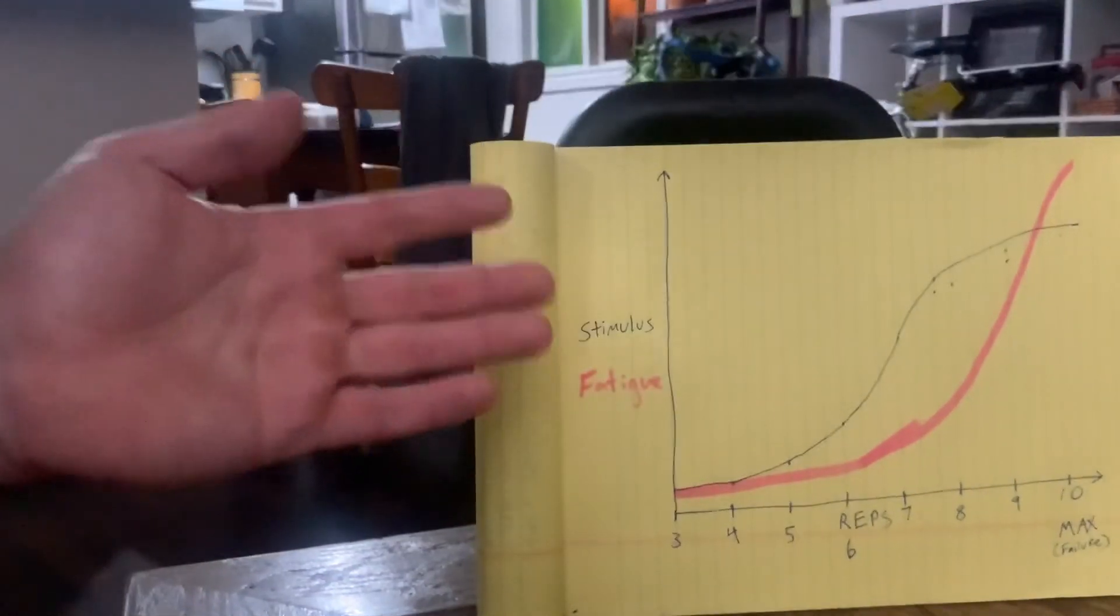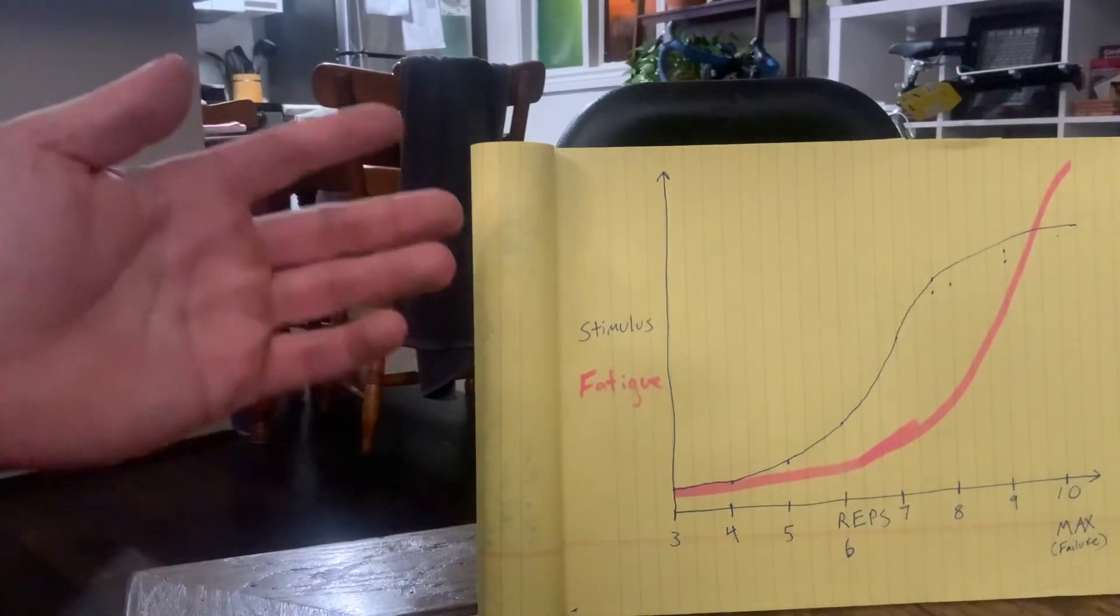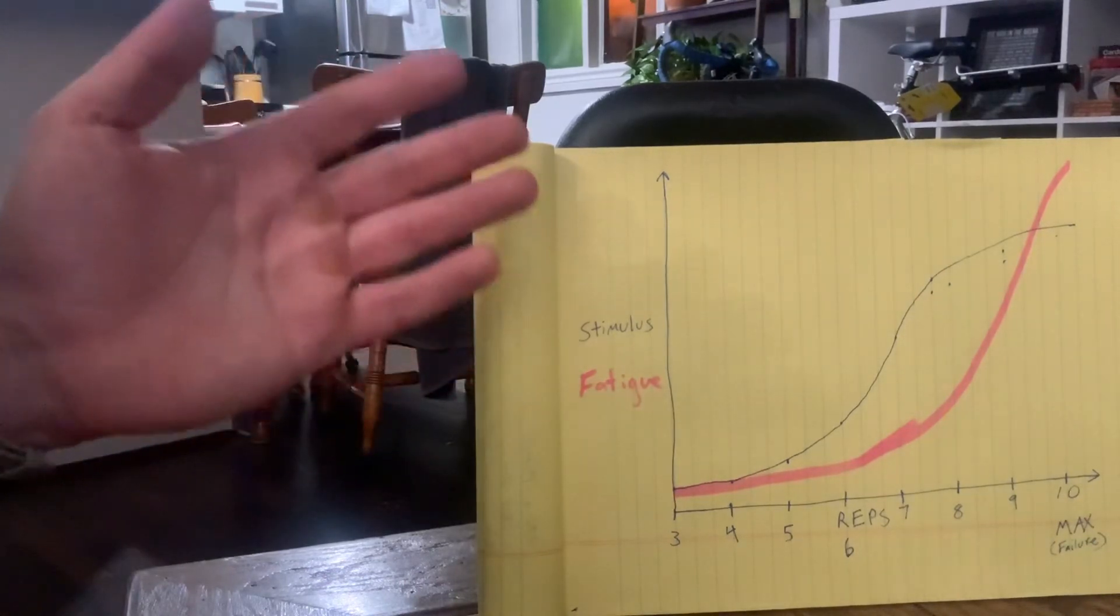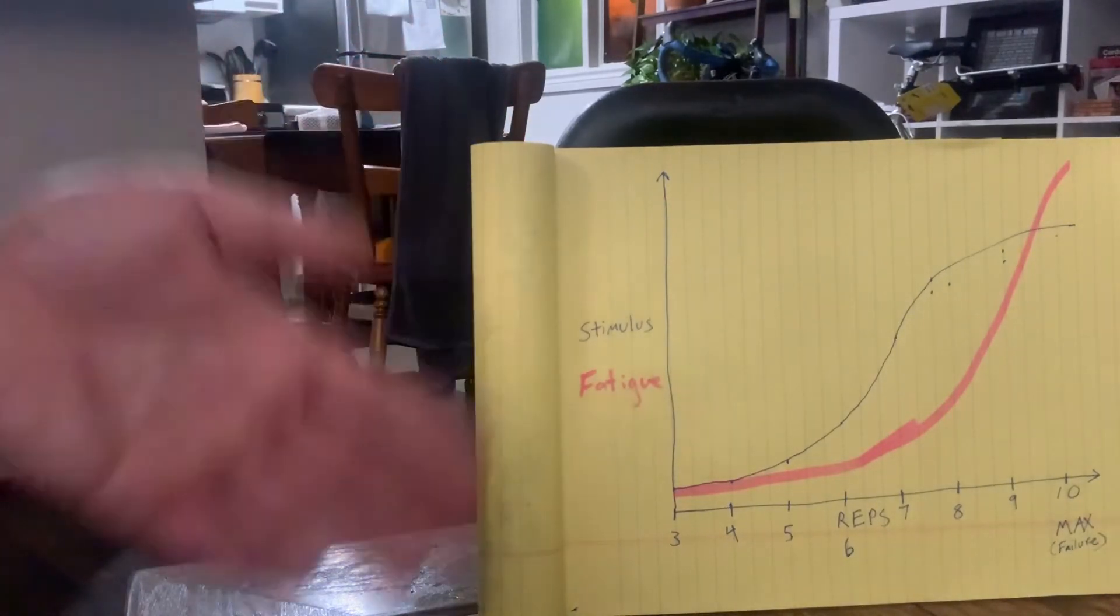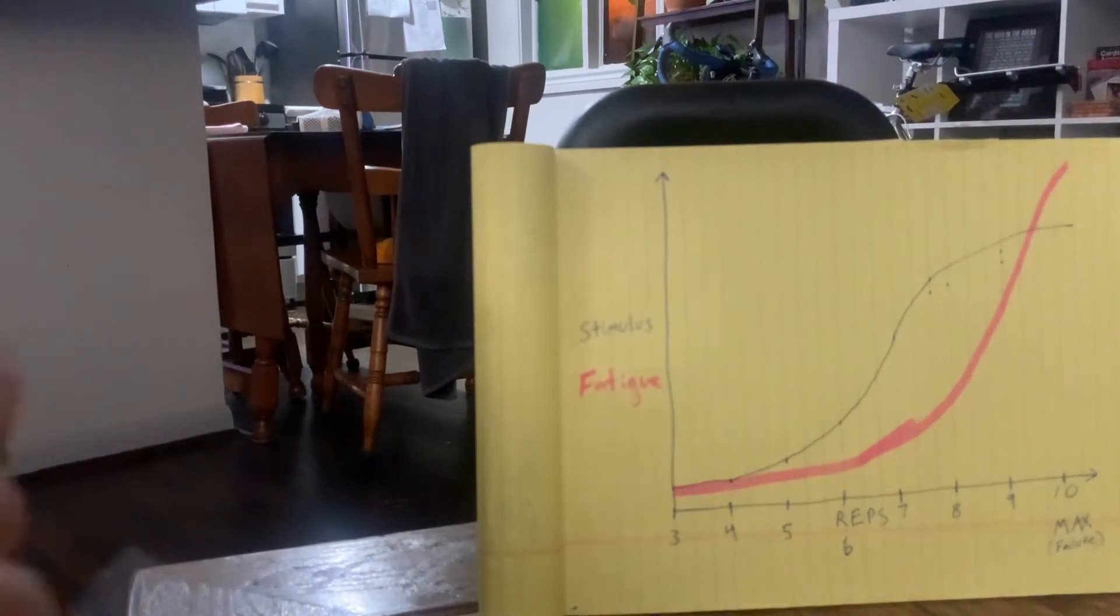And that's actually very useful because we can use that as an indicator. That's how we know we're getting close enough to failure. If you did 10 on your first set and you can only do eight on your second set, well, we're in the right range and we're going to get what we came for.